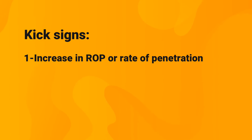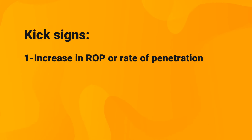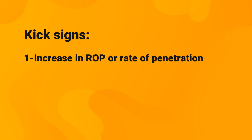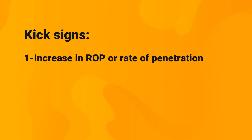In addition, cuttings are usually circulated more easily across these formations due to a lower chip hold-down pressure — the difference between hydrostatic pressure and formation pressure — which holds cuttings at the bottom of the well, causing them to be drilled more than once and consequently reducing ROP. Since chip hold-down pressure is lower in abnormal zones, the ROP will be higher.